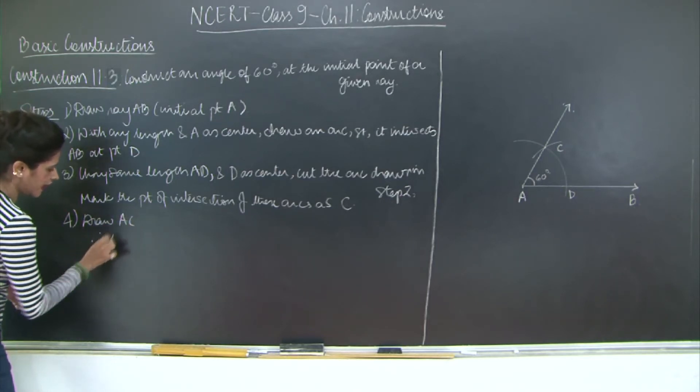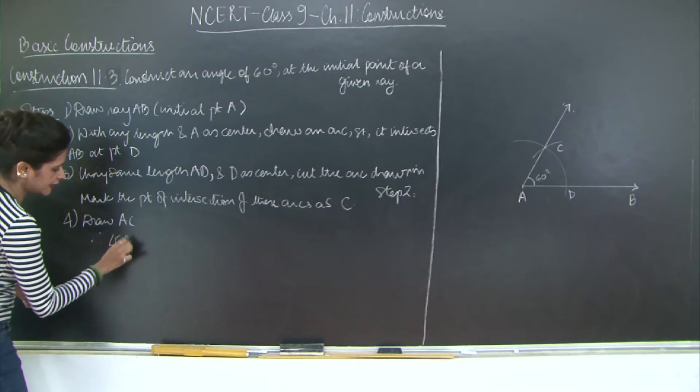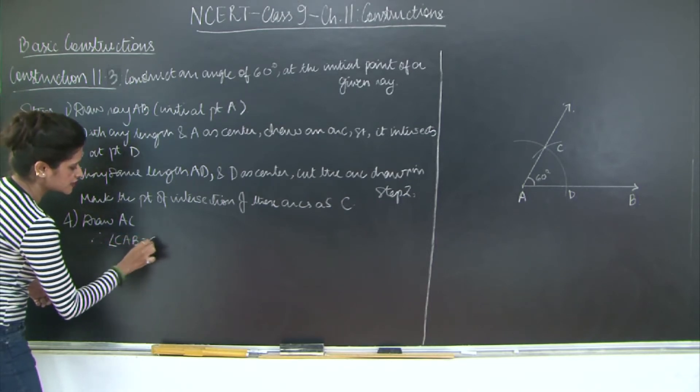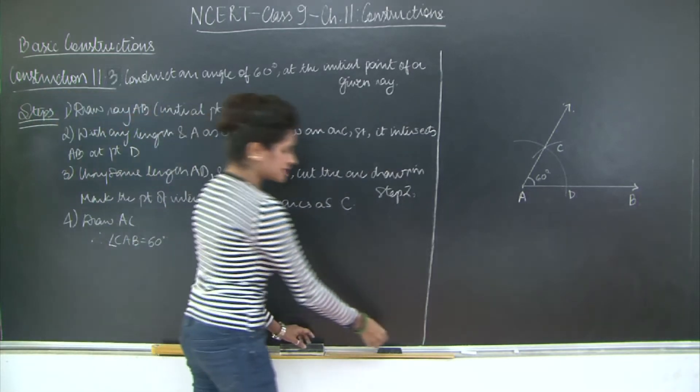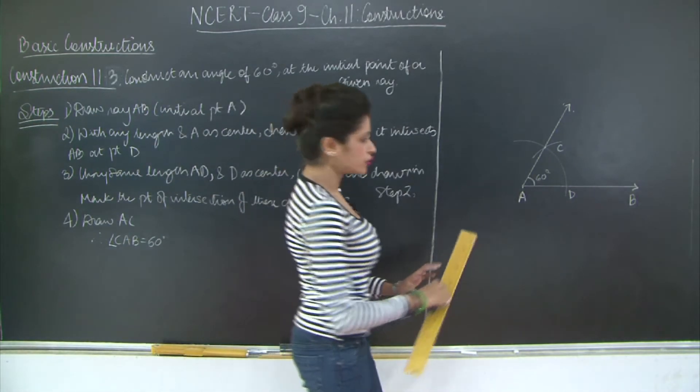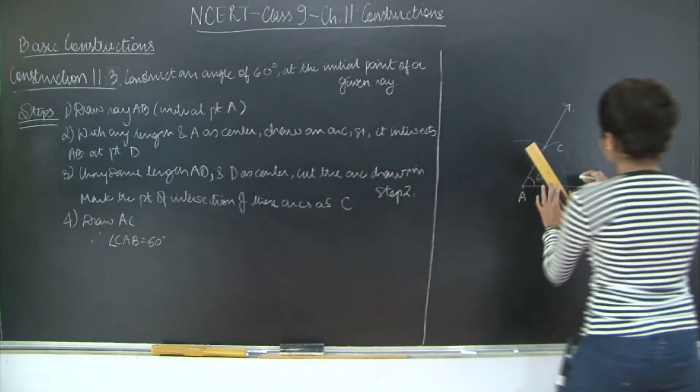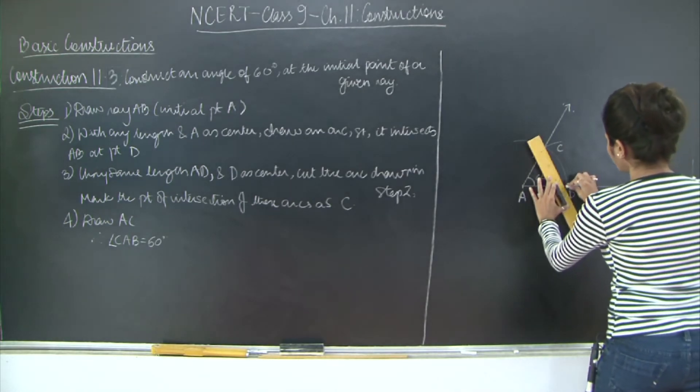Therefore angle CAB is equal to 60 degrees. So how is CAB 60 degrees? Let's take a look at it again. We will need to do a small construction. I am going to draw CD, joining point C to point D.